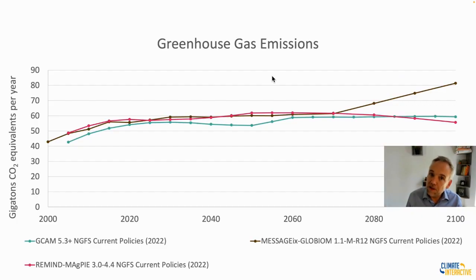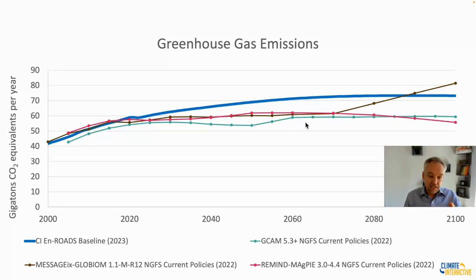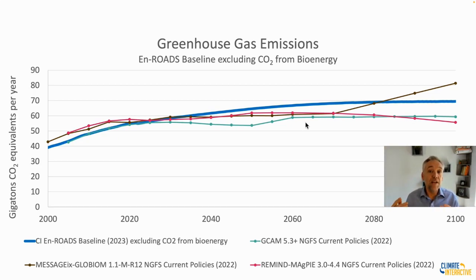Another helpful comparison is against three particular integrated assessment models: GCAM from PNNL in the United States, Remind-Magpie from Potsdam PIK in Germany, and MessageGlobium from IIASA in Austria. We compare our baseline greenhouse gas emissions against theirs. Ours is slightly higher, in particular because we count and model bioenergy differently — that's one reason we're higher. When we exclude bioenergy, we are much closer to those other models. The difference between En-ROADS and the other models is not much greater than the difference between those three scenarios themselves.